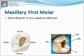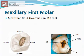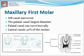The distobuccal canal orifice is located more palatally than the mesiobuccal canal orifice. More than 80 percent of maxillary first molars have shown the presence of two canals in the mesiobuccal root. The second mesiobuccal canal is located two to three mm palatal to the first mesiobuccal canal, on an imaginary line connecting the first mesiobuccal canal and the palatal canal. The mesiobuccal canal is the narrowest among the three canals. The palatal root canal has the largest diameter.